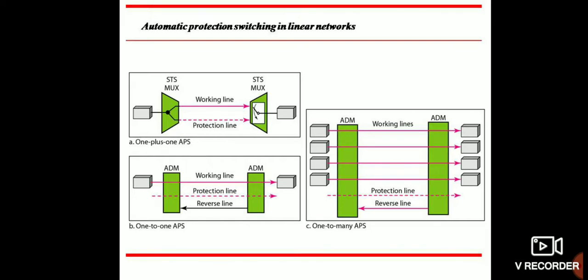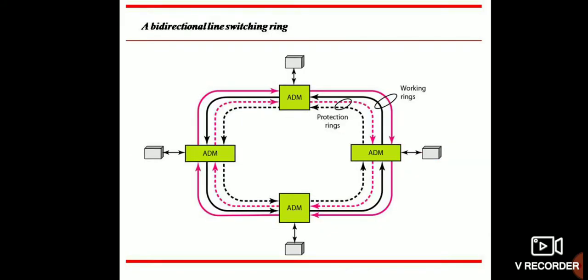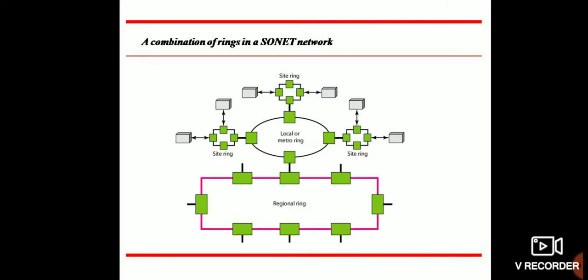Automatic Protection Switching is in linear networks: 1+1 APS and APS protections. ADM rings include working rings and combination rings. SONET networks include site rings, metro rings, and site rings.